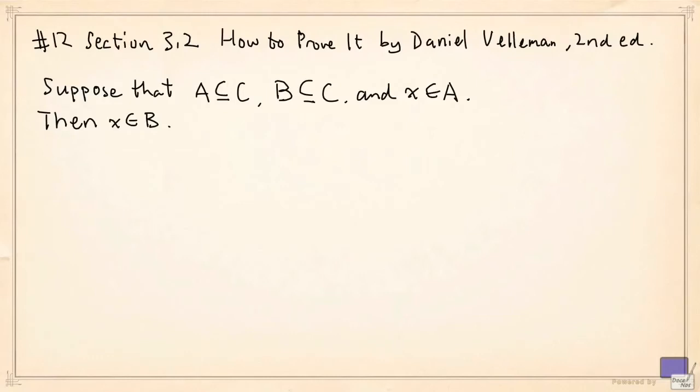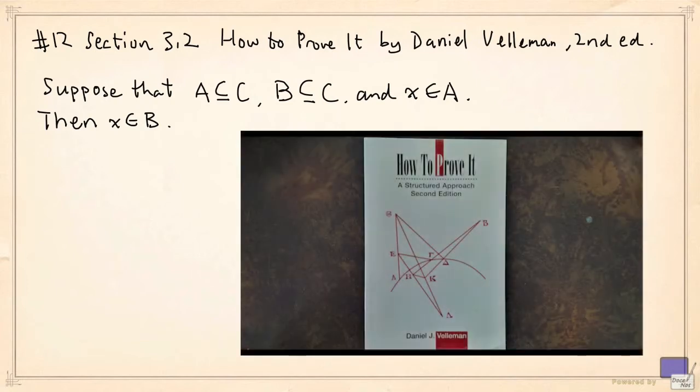We're going to look at an example of a false proof. This one is taken from exercise 12 in section 3.2 of the second edition of How to Prove It by Daniel Vellman.